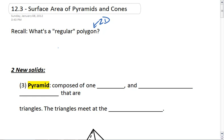A regular polygon is going to be equilateral, which means congruent sides, and equiangular, which are congruent angles.